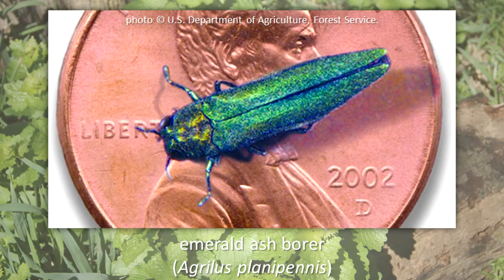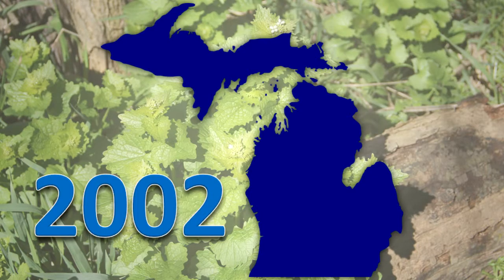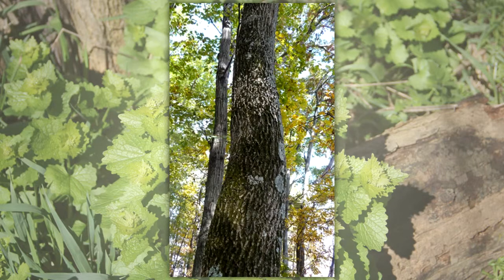Emerald Ash Borer. The Emerald Ash Borer is a native of Asia. It was discovered in Michigan in 2002 and spread quickly to other states and Canadian provinces. By 2006, it was present in Illinois. The larvae of this insect feed only on the inner bark of ash trees, causing them to die. Millions of ash trees have been killed. This pest has caused tremendous costs to cities, homeowners, forestry product businesses, and plant nursery owners.